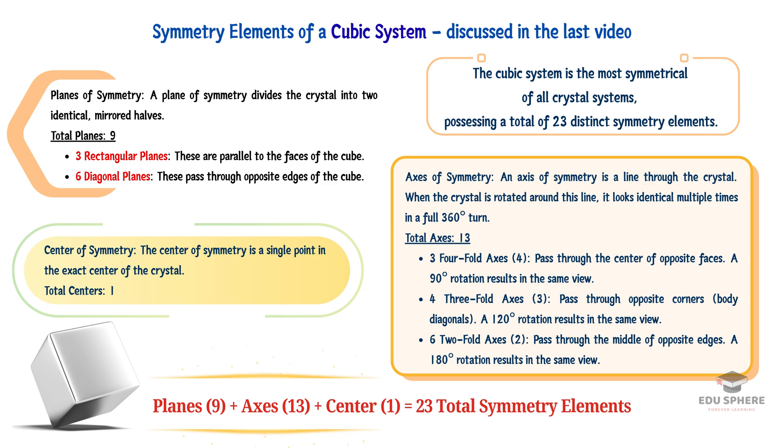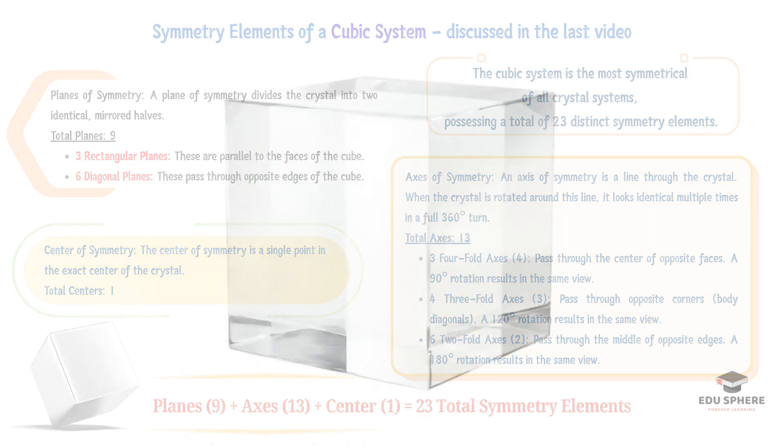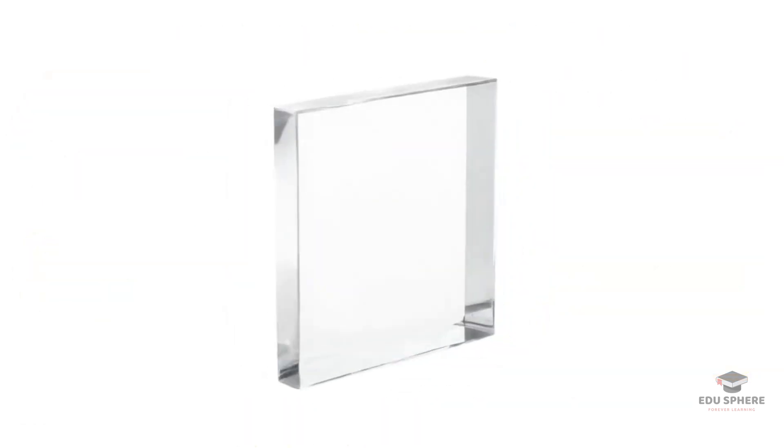But nature loves variety. What happens if we start with that perfect cube but stretch it or squeeze it along just one axis? We break some of that perfect symmetry and in doing so, we create a whole new crystal family – the tetragonal system.